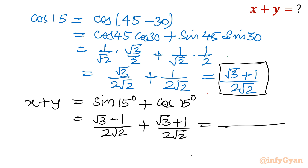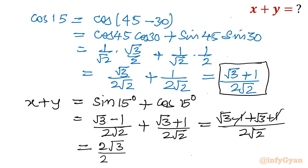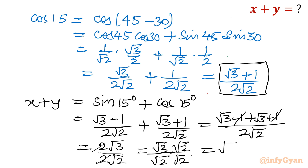Now let us find x plus y. We have x plus y equals sin 15 plus cos 15, which is (root 3 minus 1) over 2-root-2 plus (root 3 plus 1) over 2-root-2. The denominator is common, so combining the numerators: (root 3 minus 1 plus root 3 plus 1) over 2-root-2. The 1s cancel, giving 2-root-3 over 2-root-2. Cancelling the 2s and rationalizing by multiplying numerator and denominator by root 2 gives root 6 over 2. This is our ultimate and final answer: x plus y equals root 6 over 2.